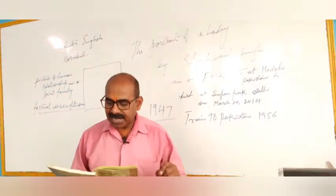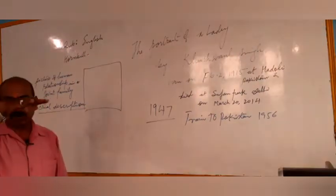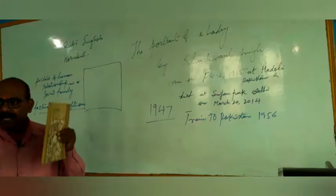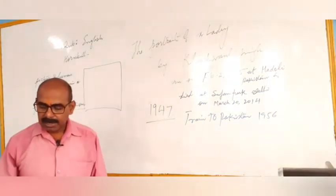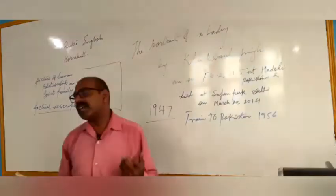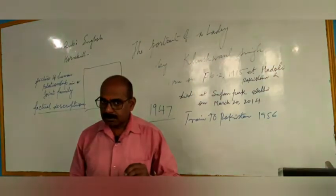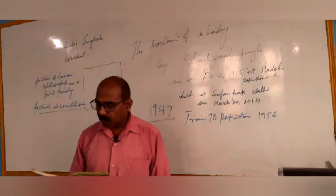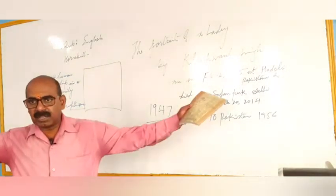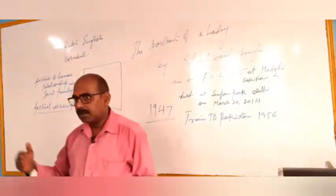My grandfather's portrait hung above the mantelpiece. Mantelpiece — just above the wall — some projected points where photographs have been kept. That is the mantelpiece, in the drawing room, where they have decorated the room by keeping the portrait of grandfather at the mantelpiece. Khushwant's grandfather wore a big turban — turban is a large piece of cloth that people used to keep over their head — mostly if you see the Sikhs, they used to wear turban.